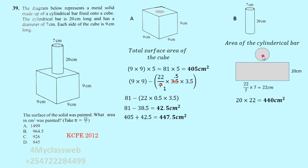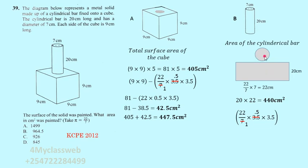For the circular part at the top of the cylinder, the area is pi r squared: 22/7 × 3.5 × 3.5. Simplifying — 7 divided by 7 equals 1, and 3.5 divided by 7 equals 0.5 — so the expression becomes 22 × 0.5 × 3.5, which equals 38.5 centimeters squared.